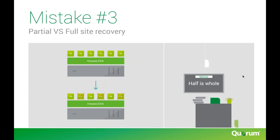The third mistake is partial versus full site recovery. Customers come to me saying 'we only need to recover these two critical servers if we have an outage — the rest can wait.' While that's true short term, if you have an actual disaster — your building catches fire or floods — you'll find that downtime without those other servers becomes the critical path to failure of your disaster recovery plan. The half is not the whole.